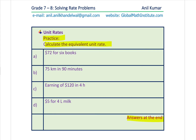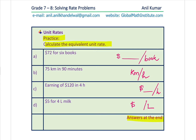What is the cost of one book? The slash gives you 'per', meaning one — so cost per book. 75 kilometers in 90 minutes — find kilometers per hour. Earnings of $120 in 4 hours — dollars per hour. And $5 for 4 liters of milk — cost per liter. Use your calculator to divide the numbers and get the unit rate, then check with my solutions.